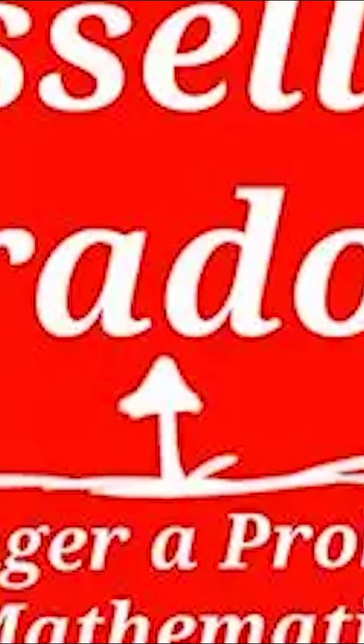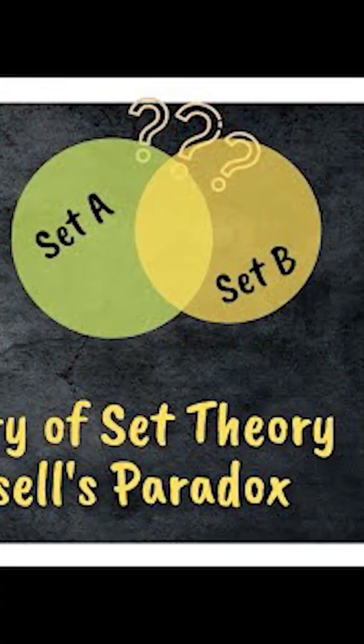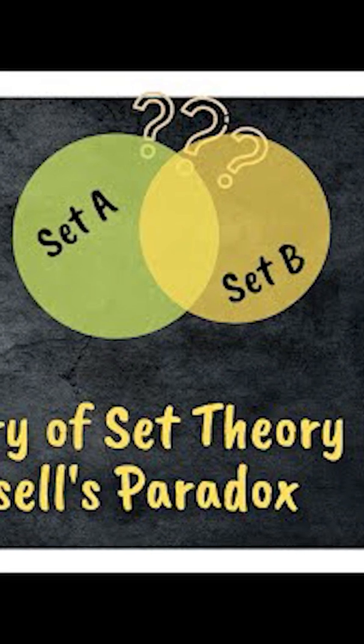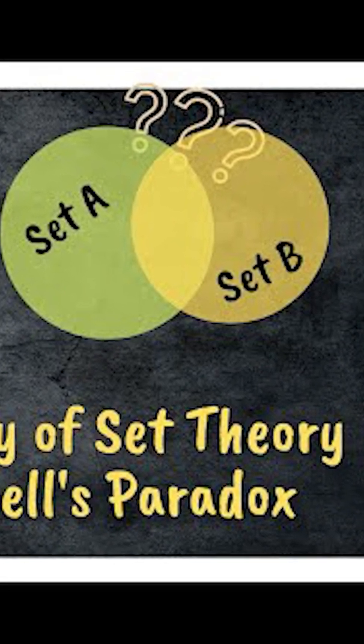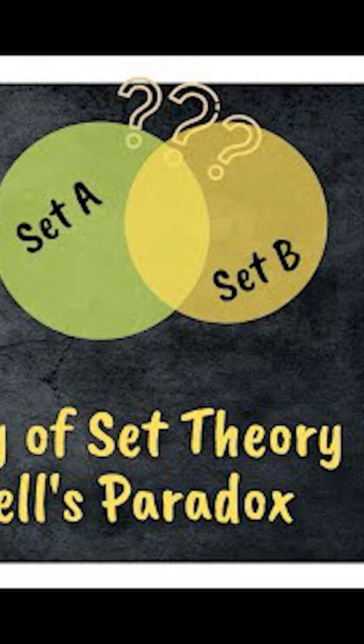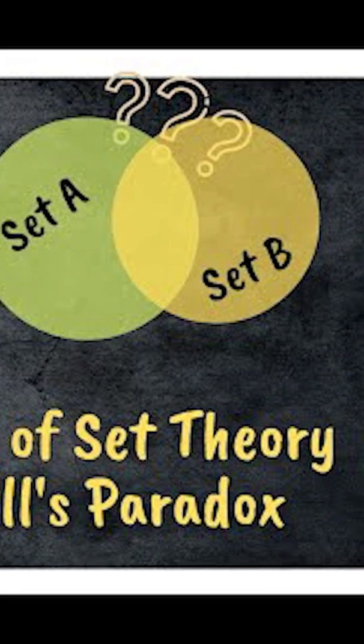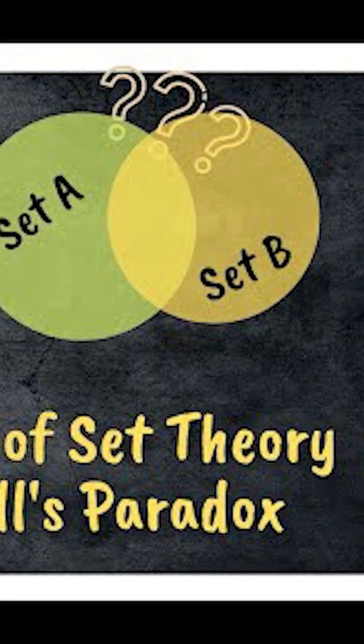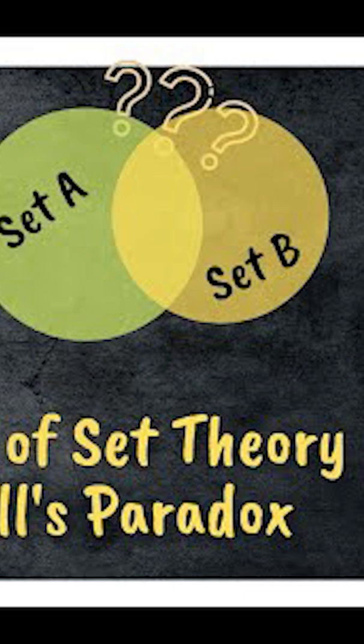Russell's paradox didn't just change math. It forced a philosophical re-evaluation of the very nature of truth, reference, and structure. It exposed the fragility of logic when pushed to its edges and remains one of the most important discoveries in the history of mathematics and philosophy.